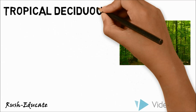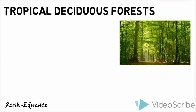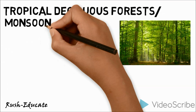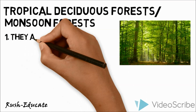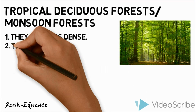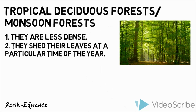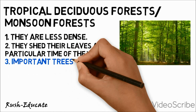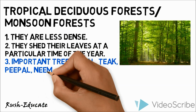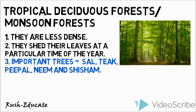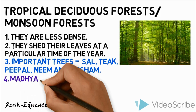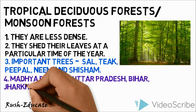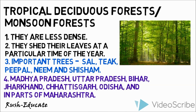In a large part of our country we have tropical deciduous forests. These forests are also called monsoon forests. They are less dense and shed their leaves at a particular time of the year. Important trees of these forests are sal, teak, peepal, neem, and shisham. They are found in Madhya Pradesh, Uttar Pradesh, Bihar, Jharkhand, Chhattisgarh, Odisha, and in parts of Maharashtra.